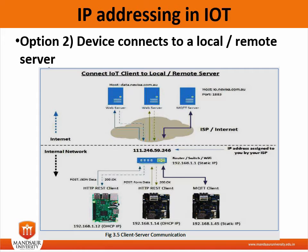Because the device is creating the connection, it allows us to use DHCP and dynamically assigned IP addresses. This diagram shows two devices sending HTTP REST POST requests to a server in the cloud. If the remote server accepts the connection, it will generally respond with 200 OK, and the client will then close the connection until the next post.